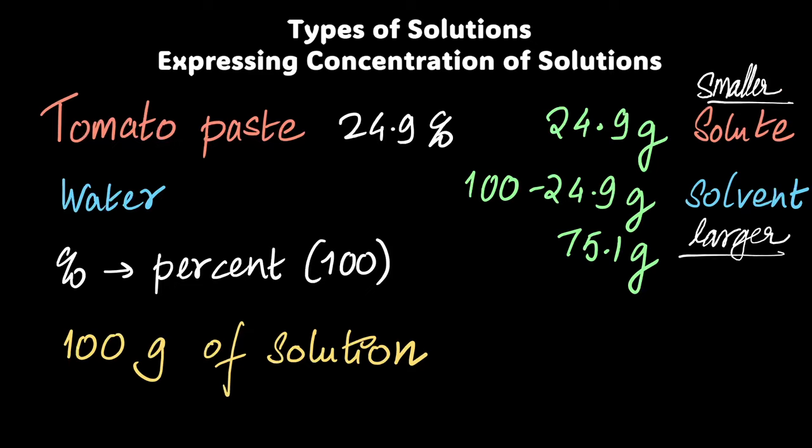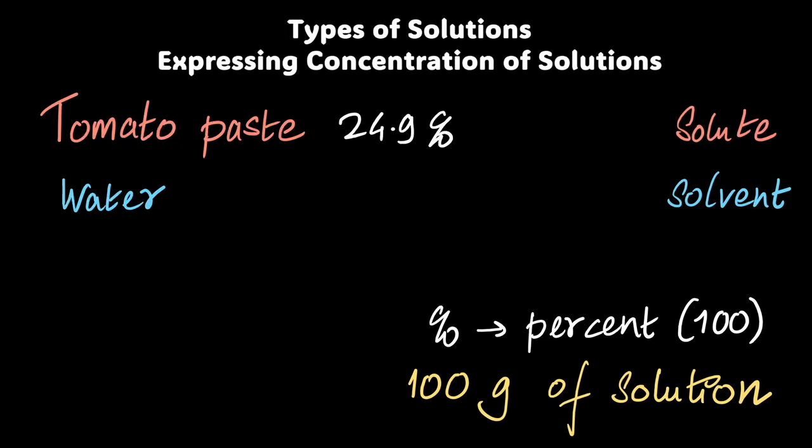Right now I've got two liquids, so that's one type of solution. I could have a liquid in a solid, a solid in a liquid, a gas in a liquid—many different types of combinations and permutations. This solution contains the solute and the solvent. But what is this 24.9% actually mean? This is great if you have exactly 24.9 grams of the tomato paste in 100 grams of paste plus water. How is this useful?